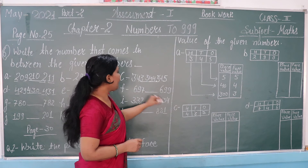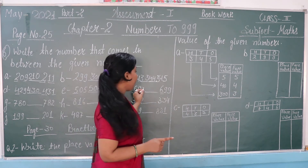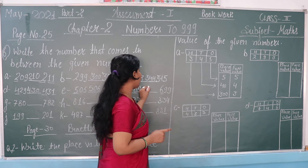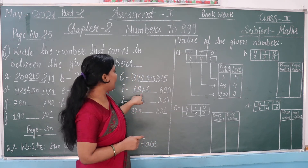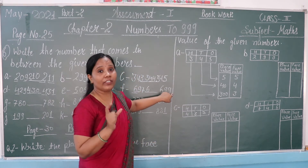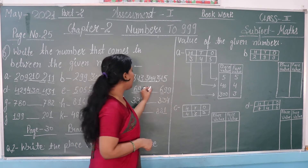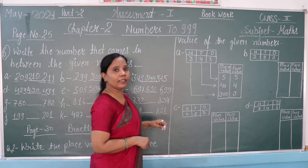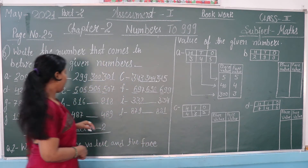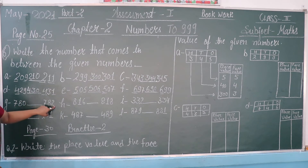Next is around the 600s. As you know, we write 6 first, then between 97 and 99 the middle number is 98. So the answer is 698. Next: 780 and 782.